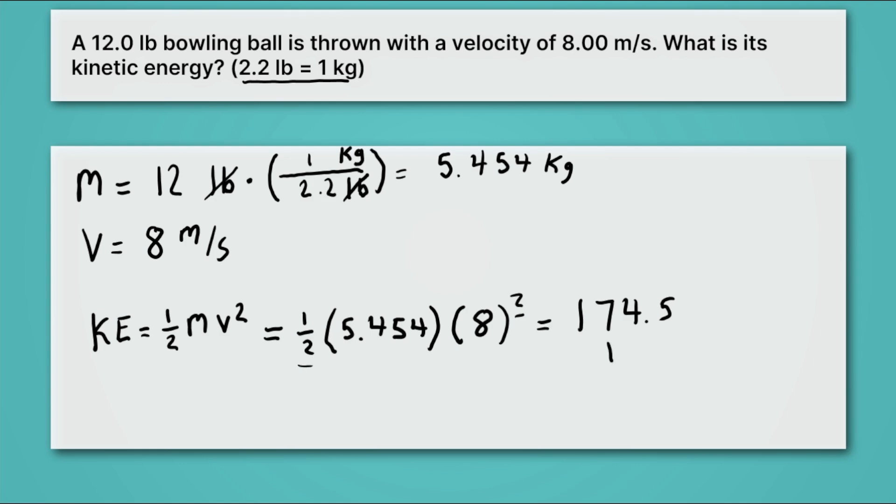And now, in this case, we're going to round for sig figs. And notice that the numbers we've been given, 8.00 and 12.0 have three sig figs each. So we're going to keep the first three digits. And this 5 is going to make us round up. So we'll get 175 joules. Joules, recall, are the SI unit for our kinetic energy. So that bowling ball will have an energy, a kinetic energy, of 175 joules.